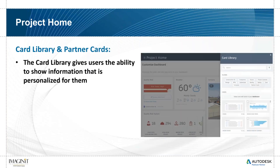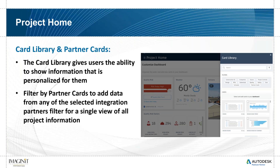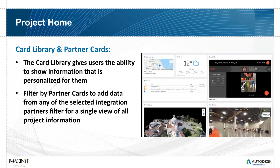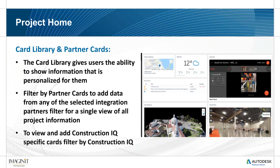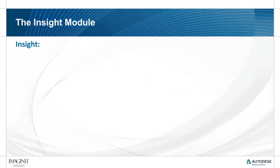You can also put in what we call partner cards. There's a card library of standard reports, but you also have the ability to add partner cards — meaning third-party applications such as job site cameras, Power BI, or other tools. If they have a shareable URL and are supported by Autodesk, they can be placed into this environment — drone displays, for instance. There's also Construction IQ, which we'll get into a bit later, that can also be shown here if you choose.